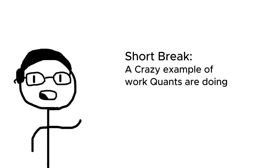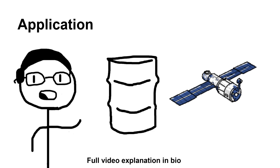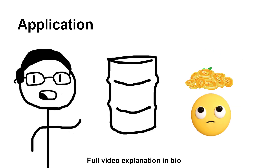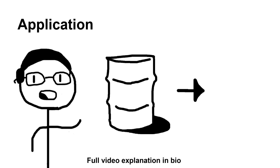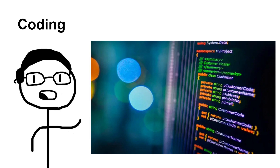As a short break, a crazy example of interesting work quants are doing: satellite imagery of oil tanks around the world. A quant wanted to figure out the price of oil before everyone else knows. They realized with satellite imagery they could measure the shadow of each oil tank — if an oil tank has more oil it'll be taller, and if it has less oil it'll be shorter. Using this data, they're able to predict the price of oil before it's public and trade oil based on regions when supplies are low or high.